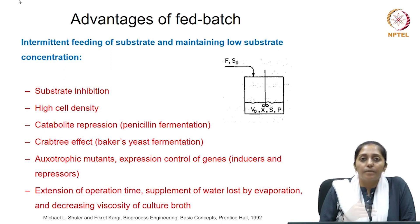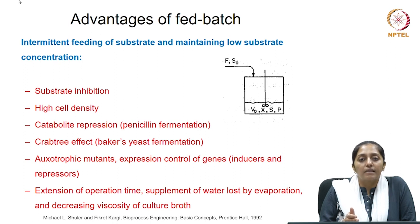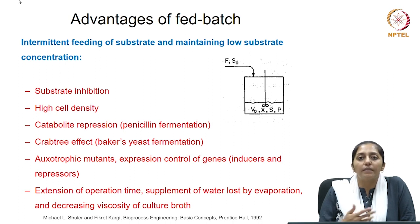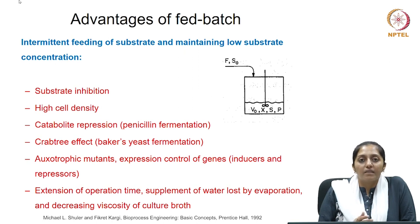High cell density is another advantage. A limitation of a batch process is that it cannot go beyond a certain cell mass concentration once the substrate has completely depleted, entering the stationary phase with no more substrate to increase biomass. A fed batch process avoids allowing the cells to reach the stationary phase, thereby keeping increasing the final biomass concentration and cell density.